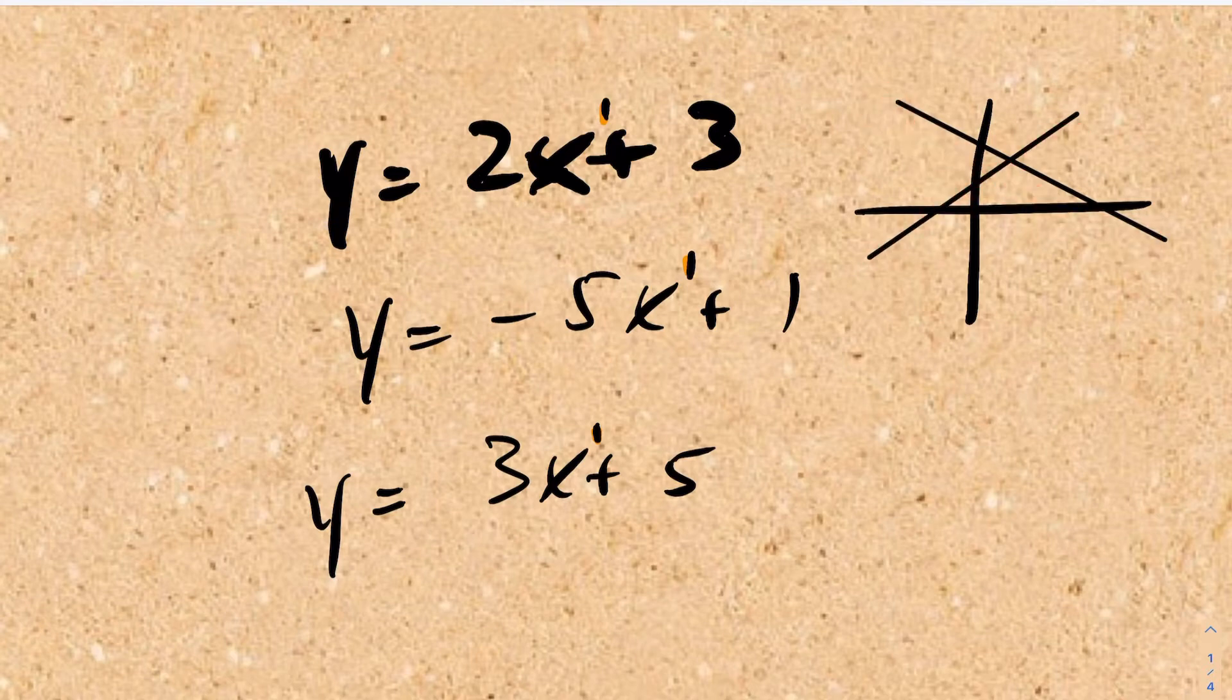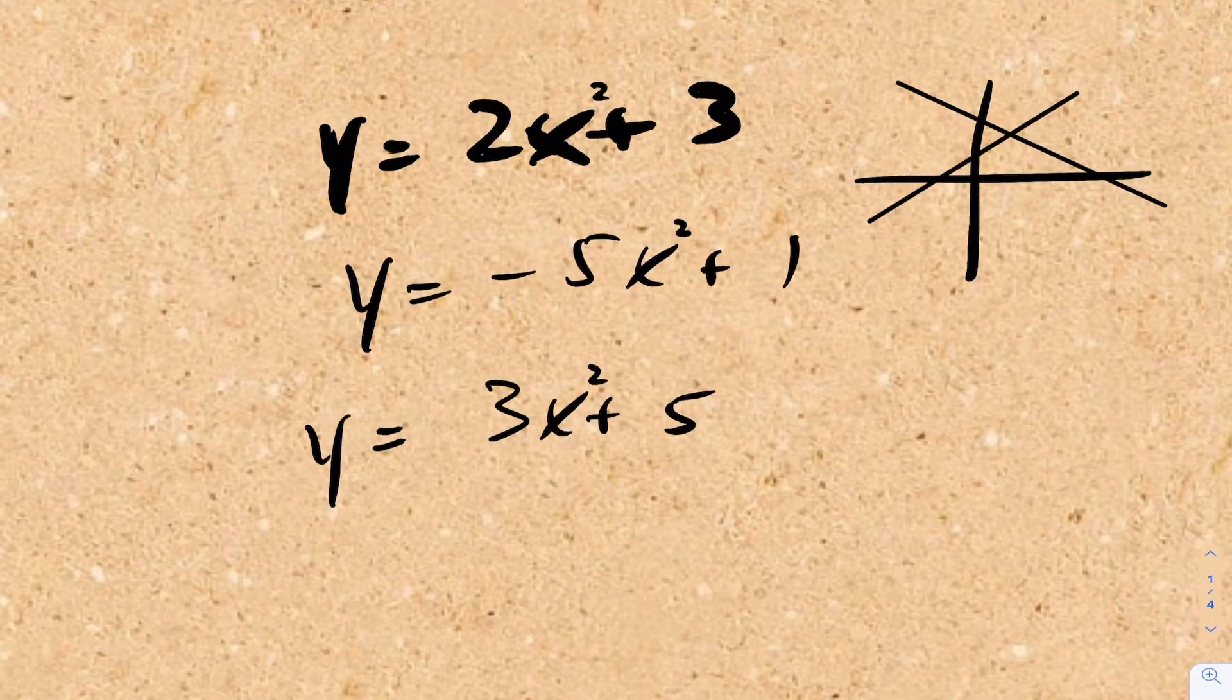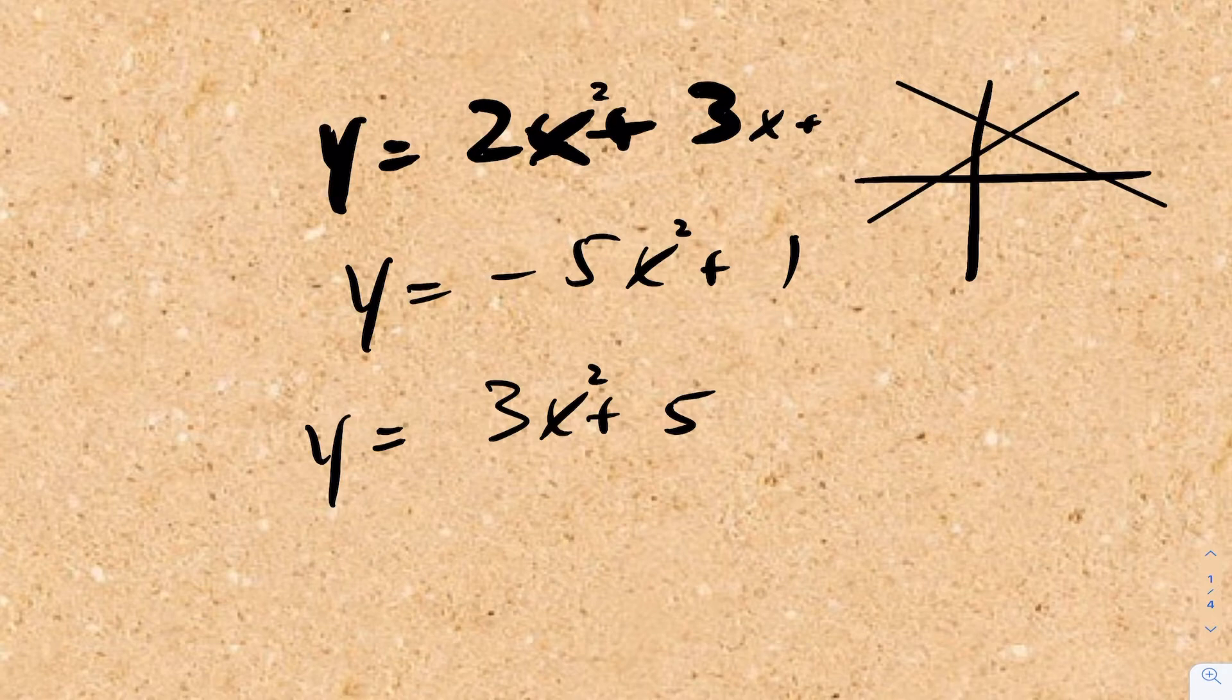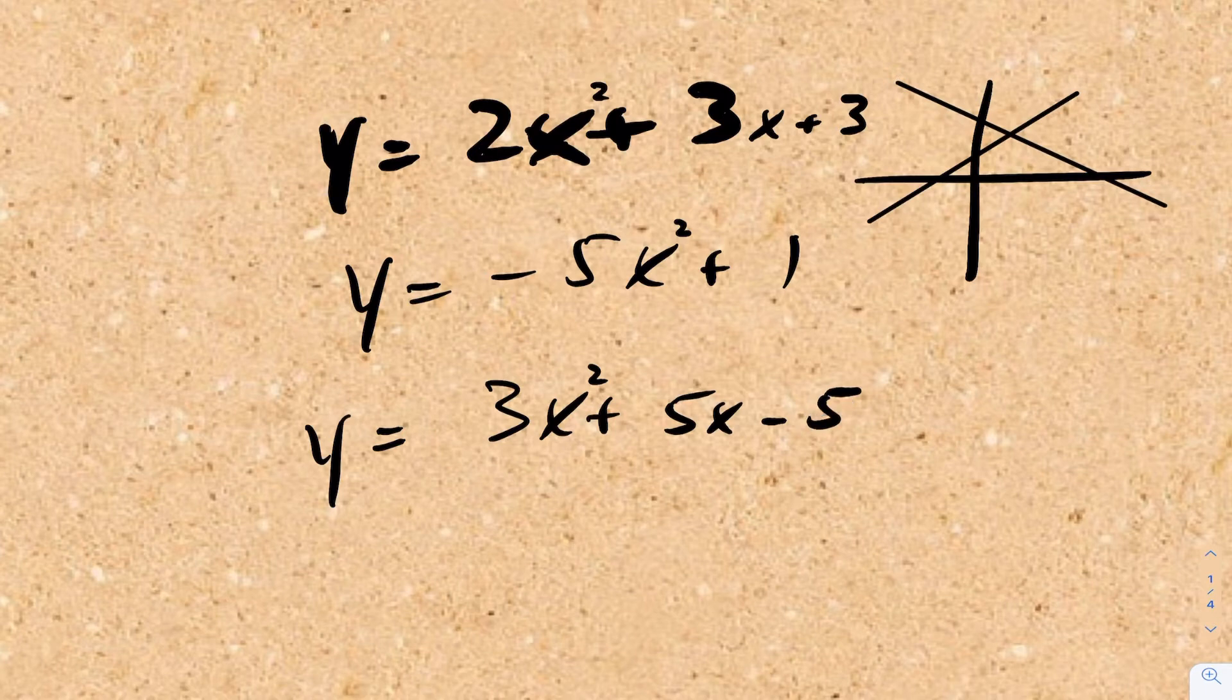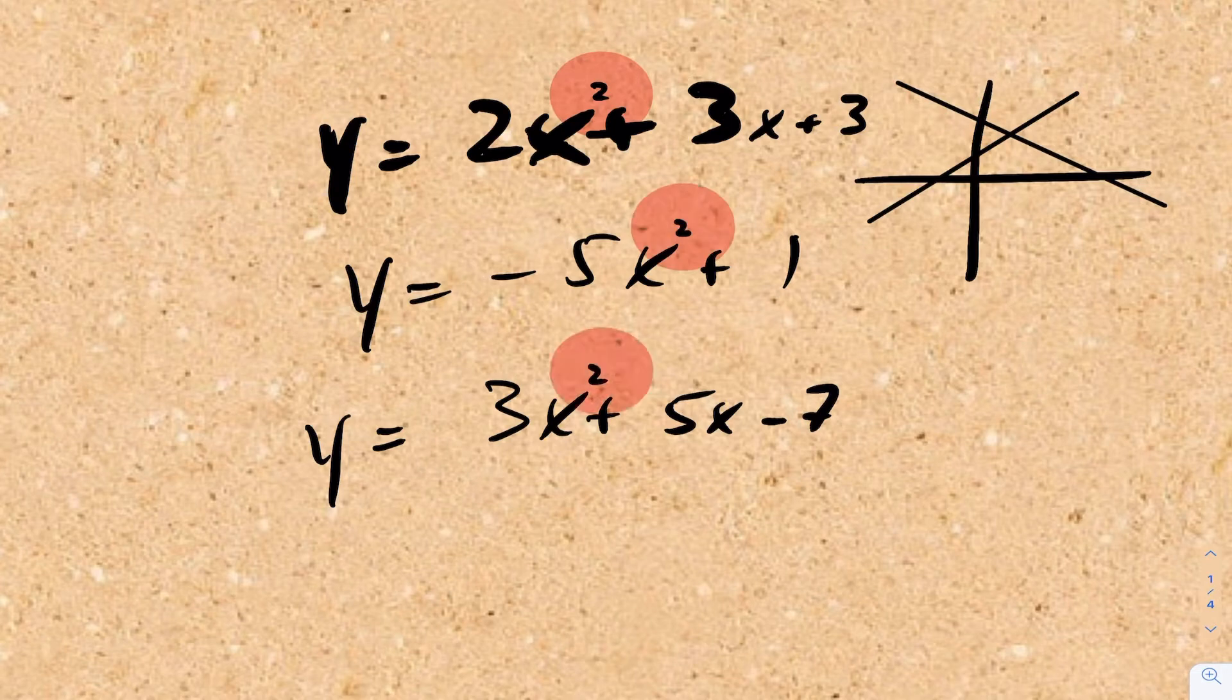Now what we're going to be doing is we're going to be looking at relations where they're not powers of 1, but they have powers of 2 in them. You can still have x's, like I can still have an x plus 3, or I could have a 5x minus 5 or 8. It doesn't really matter. But the point being here is now we're looking at relations where the highest power that exists is a 2. When that happens,